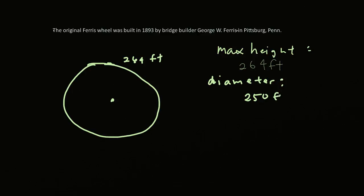So what does that make the radius? What would the radius be of this wheel with the given information? The radius will just be half of the diameter, so from here to this point it will be 125 feet for the radius.